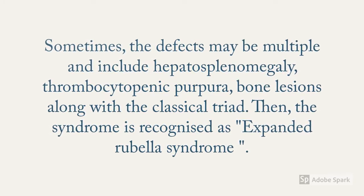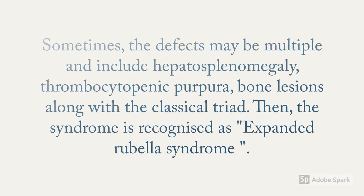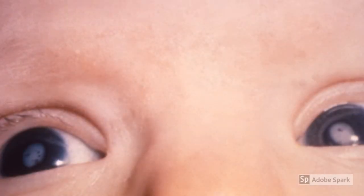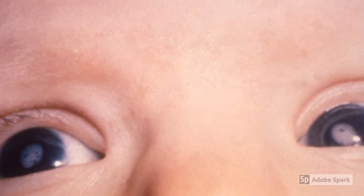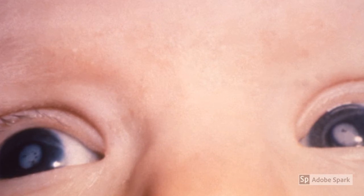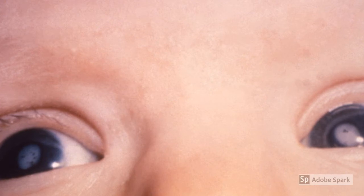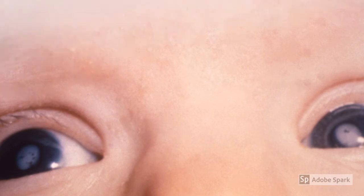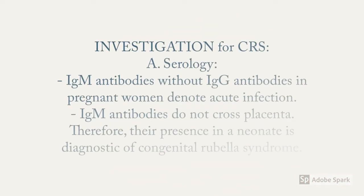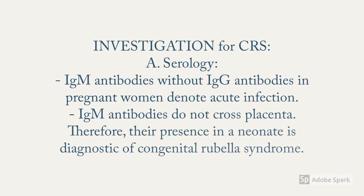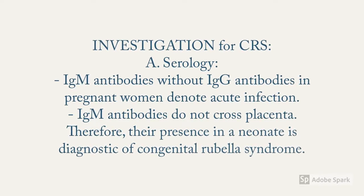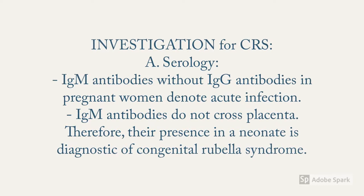Sometimes defects may be multiple and include hepatosplenomegaly, thrombocytopenic purpura, and bone lesions along with the classical triad; this is then recognized as expanded rubella syndrome, which has more severe consequences than congenital rubella syndrome itself. The cataract of congenital rubella syndrome was the first clinical manifestation noticed by Australian ophthalmologist Gregg in 1941, leading to the discovery of the relationship between congenital cataract and maternal rubella.